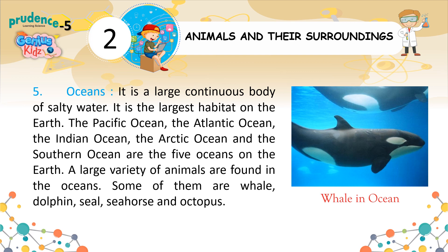Oceans. It is a large continuous body of salty water and the largest habitat on the earth. The Pacific Ocean, the Atlantic Ocean, the Indian Ocean, the Arctic Ocean, and the Southern Ocean are the five oceans on the earth. A large variety of animals are found in the oceans. Some of them are whale, dolphin, seal, seahorse, and octopus.